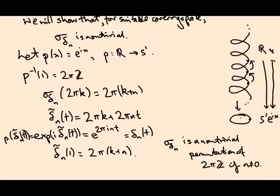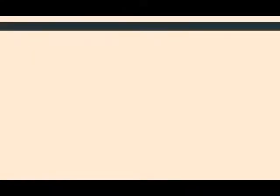Finally, we want to check that F is surjective. So, given a loop gamma in S1 based at 1, I want to find n such that delta n is homotopic to gamma.